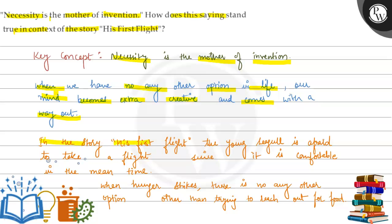In the story His First Flight, the young seagull is afraid to take a flight since it is comfortable in the meantime.